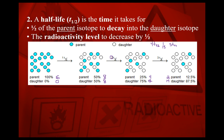The radioactivity level also decreases over time. Initially there are a lot of parent isotopes turning into daughter ones — a change of eight in the first half-life, then a change of four, then two. So the radioactivity level itself is decreasing as time passes because there's less of the parent isotope being converted into a daughter one.